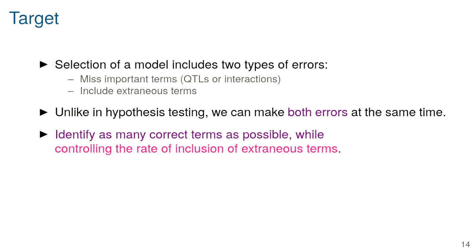Whereas most variable selection is focused on minimizing prediction error, here I think our goal is really to identify the key terms. Selecting a model includes two kinds of errors — missing important terms and including extraneous terms — whereas in hypothesis testing you do one or the other. By choosing a set of variables we are potentially missing some important ones and including some extraneous ones. What I view as the goal is to identify as many correct terms as possible while controlling the rate of inclusion of extraneous terms.